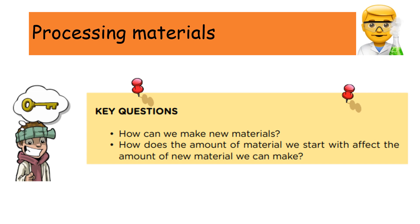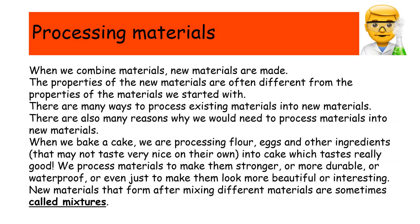Processing materials. Key questions: how can we make new materials, and how does the amount of material we start with affect the amount of new material we can make? When we combine materials, new materials are made. The properties of the new materials are often different from the properties of the materials we started with. There are many ways to process existing materials into new materials, and many reasons why we would need to do so.